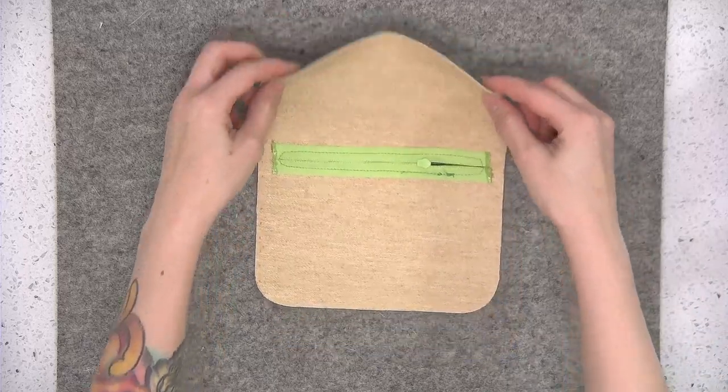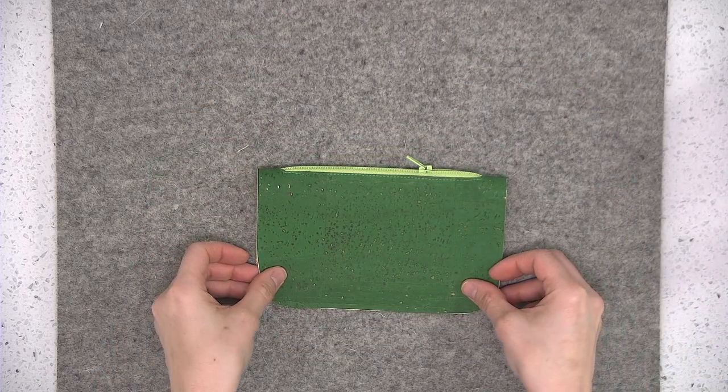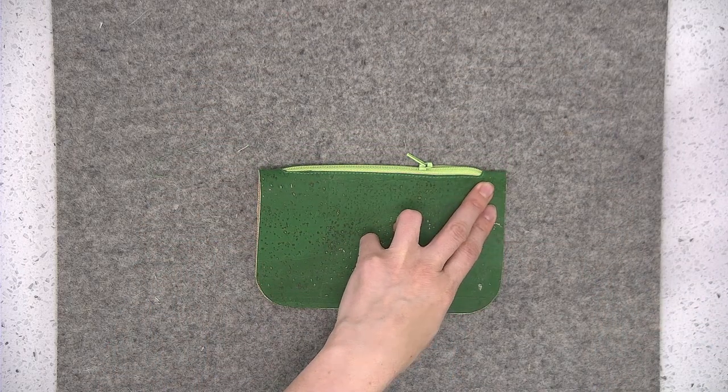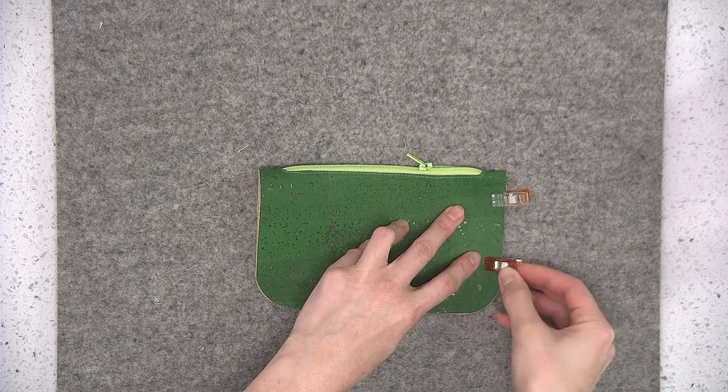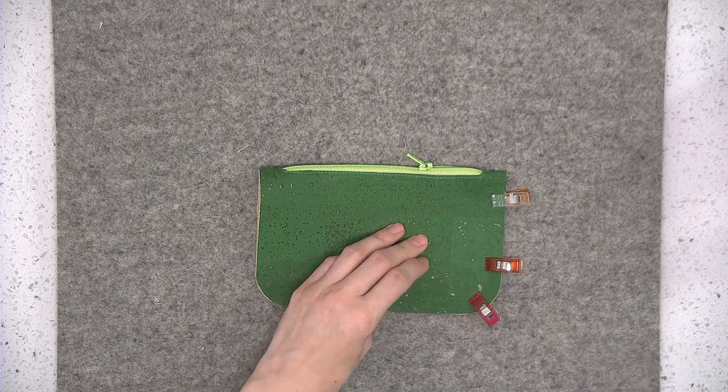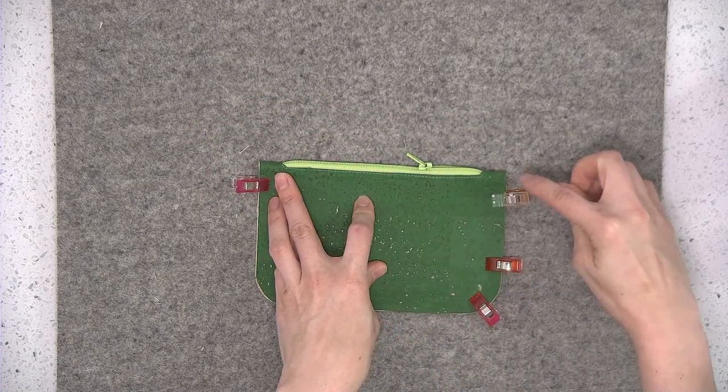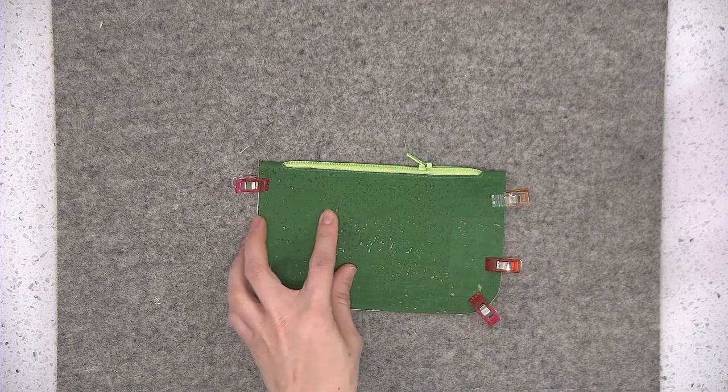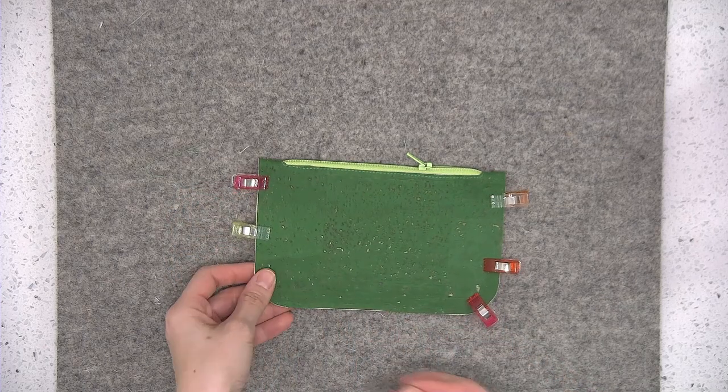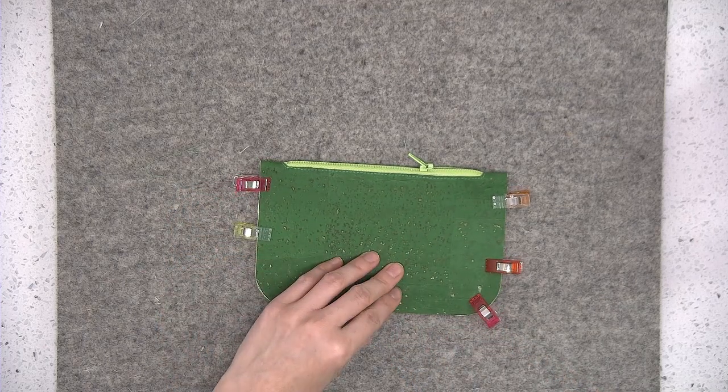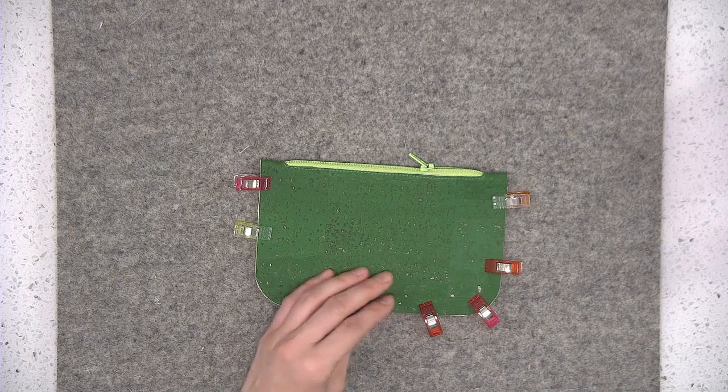Now I'm going to bring the fabric wrong sides together so that the bottom and sides meet and just go ahead and put some Wonder Clips on there. We're going to start sewing an eighth of an inch away from the top edge and then come back around to the opposite end, stopping about an eighth of an inch away from the opposing corner.